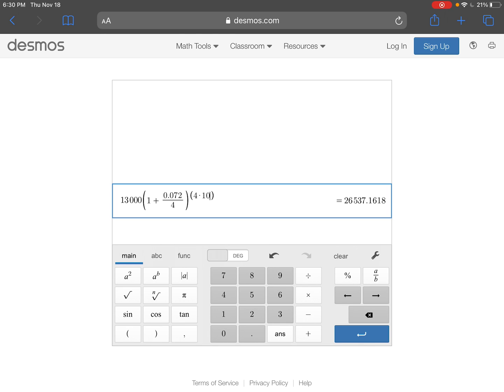Again, we are talking about money. So dollars and cents. Meaning we have to round to two decimal places. So if I look at my third decimal spot, am I going to round up or keep it the same? Keep it the same. So in 10 years, Melvin's $13,000 has more than doubled. He now has $26,537.16.